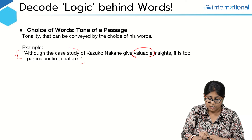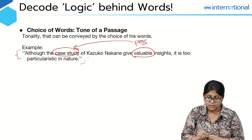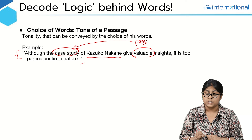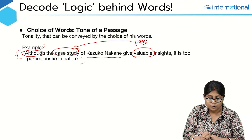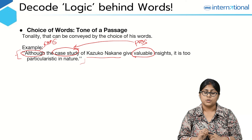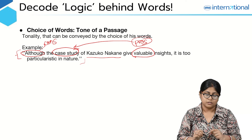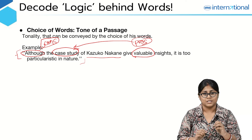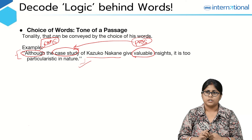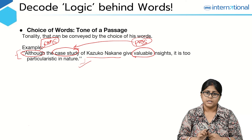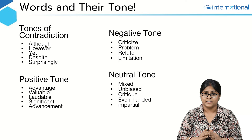The word 'valuable' tells us that the author is highlighting some pros about this case study. But the author has also used the word 'although,' which suggests there are some drawbacks to this particular case study as well. So while highlighting some pros, the author is not considering it completely valuable — he is also highlighting drawbacks. Therefore, the author is not being very disapproving; he is on a neutral stand about this case study.